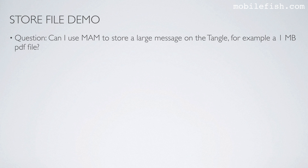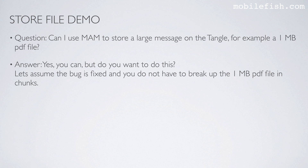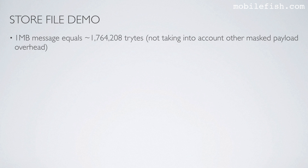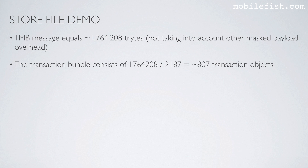Can I use MAM to store a large message on the Tangle, for example a 1 MB PDF file? Yes, you can. But do you want to? Assuming the bug is fixed and you do not have to break up the 1 MB PDF file in chunks, this file is stored on the Tangle by creating a transaction bundle containing multiple transaction objects. A 1 MB message equals approximately 1.8 million trits. The transaction bundle consists of 1.76 million divided by 2,187, which equals approximately 807 transaction objects.